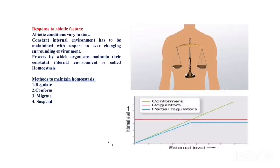In response to abiotic factors, environmental conditions keep changing, so organisms must maintain a constant internal environment despite the ever-changing external environment. This is achieved through a process known as homeostasis. Organisms maintain homeostasis by four methods: regulation, conformity, migration, and suspension.